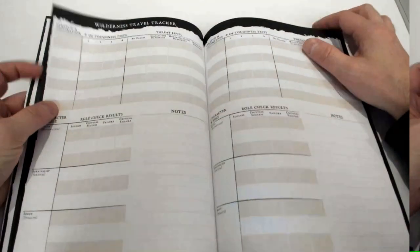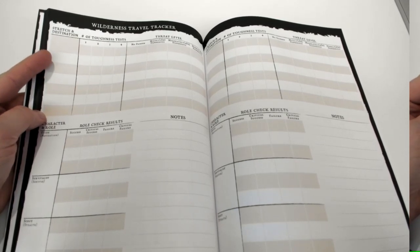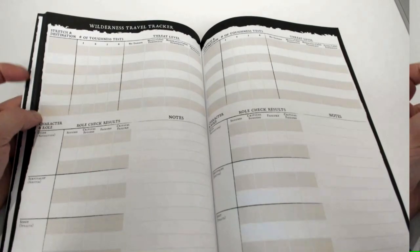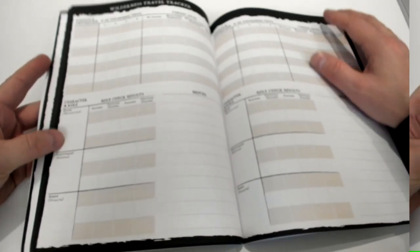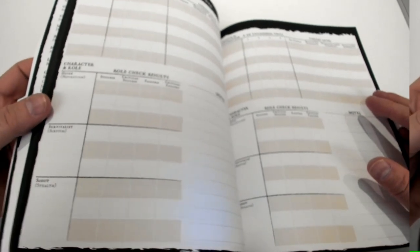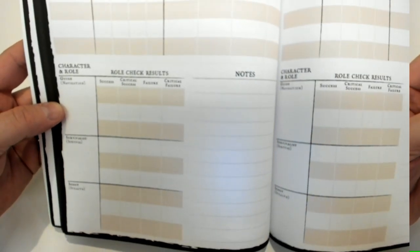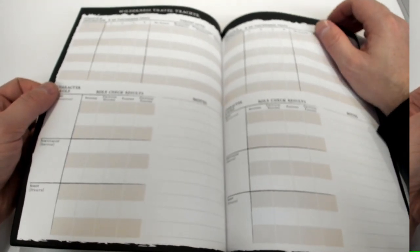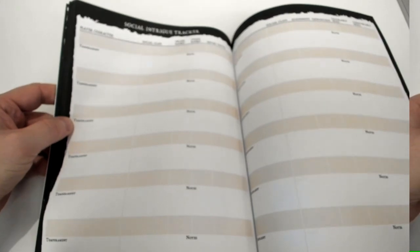Then we have wilderness travel trackers. You have your different stretches - basically what's the destination they're going to, how long is that destination? Is it a short stretch or a long stretch? How many toughness tests does it require? What's the threat level? Including the characters and the role they select between the guide, the survivalist and the scout. We've got I believe another sheet for wilderness travel to track as well. This whole book by the way comes in I think around 40 pages, so there's plenty of trackers in here for you to use.